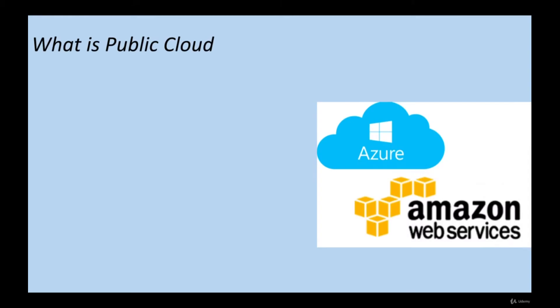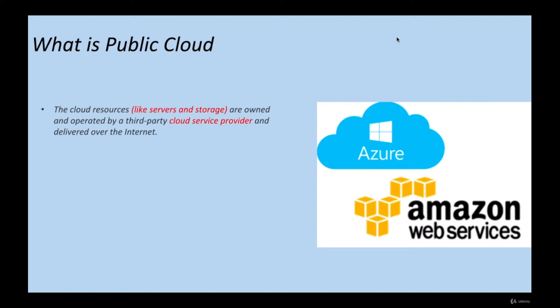Welcome to this lecture on public cloud, where we'll study what public cloud actually is. In subsequent lectures, we'll study the different deployment models — public cloud, private cloud, and hybrid cloud. We'll start with public cloud first and understand its benefits. Examples of public cloud include AWS and Azure, which provide all five essential characteristics defined by NIST.